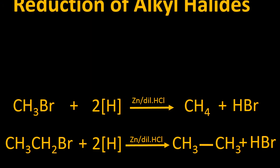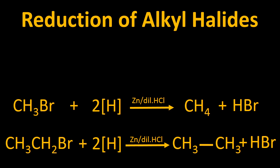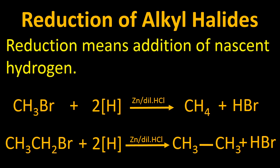The next method is the reduction of alkyl halides. Reduction means the addition of hydrogen to alkyl halides. The reactants are alkyl halides and nascent hydrogen. The reaction takes place in the presence of zinc and dilute HCl. The bond in the alkyl halide breaks down; the methyl group attaches with one hydrogen to give us methane, and the remaining hydrogen forms a bond with bromine to give us HBr. This reaction can take place with methyl bromide as well as ethyl bromide.